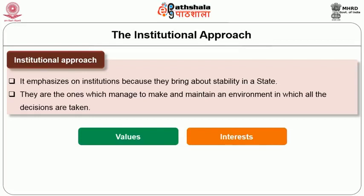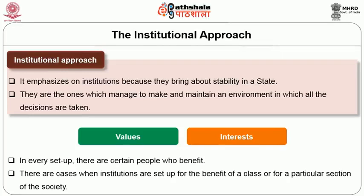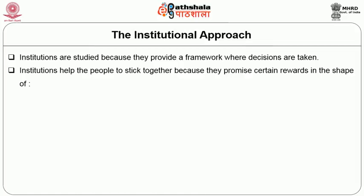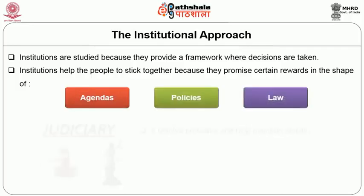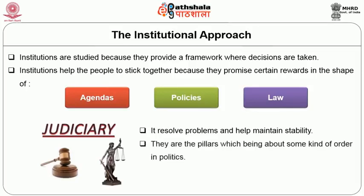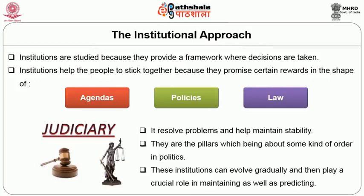Institutional approach emphasizes on institutions because they bring about stability in a state. They are the ones which manage to make and maintain an environment in which all decisions are taken. The values and interests are also decided within these institutions. In every setup there are certain people who benefit. These are the cases when institutions are set up for the benefit of a class or a particular section of society. Institutions are studied because they provide a framework where decisions are taken and they help people stick together through rewards in the shape of agendas, policies and law. Institutions like the judiciary resolve problems and help maintain stability, and are the pillars which bring about some kind of order in politics.